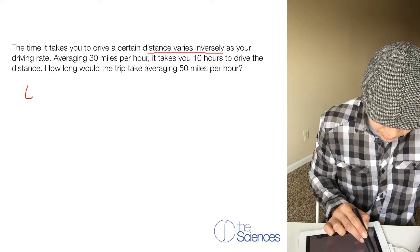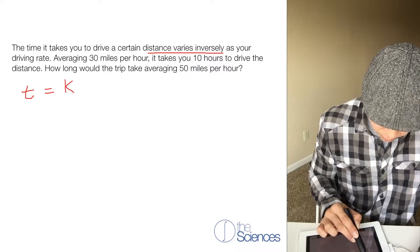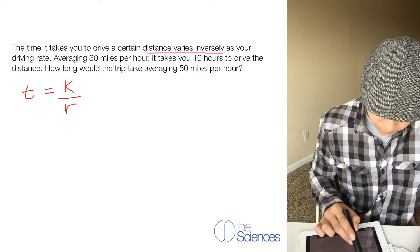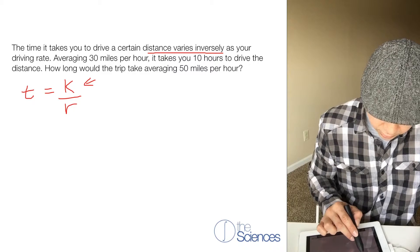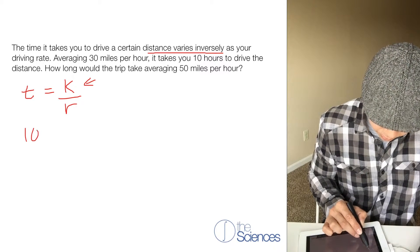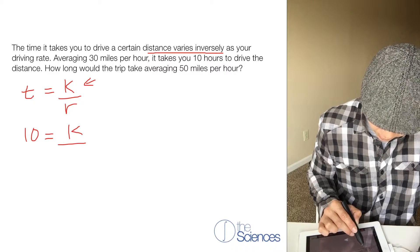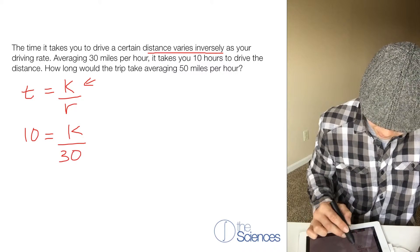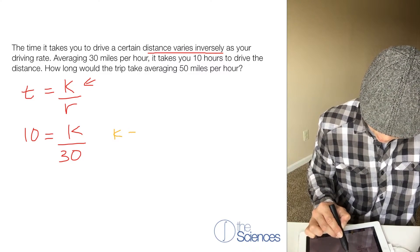That means t equals k over r. k is our distance. This is our time and our rate. It says that it took us 10 hours to travel 30 miles. So k equals 300.